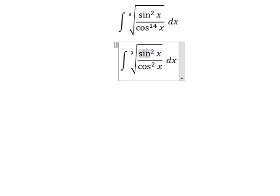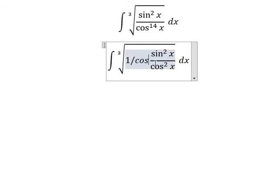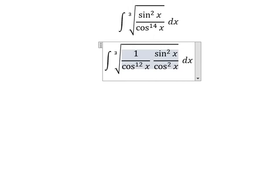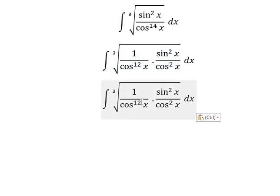I will put another 1 over cosine x to the power of 3. Now this is about the cubic root, this is about the power 3. In here, number 12 divided by 3, you got about 4.